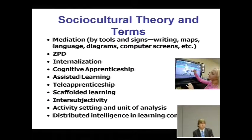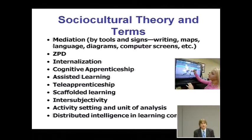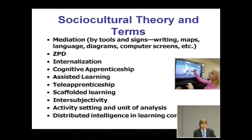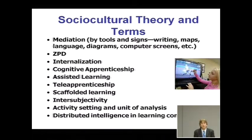Social constructivism is concerned about intersubjectivity — what we know jointly at a point in time and how we can take certain things for granted to solve problems more expediently. For example, we might all know that International Business Machines can be shortened to IBM; once you have that intersubjectivity, you can push on faster. The classroom is the unit of analysis from a social constructivist point of view — the activity setting — not the individual student necessarily. It changes the focus to the learning environment you're trying to create.